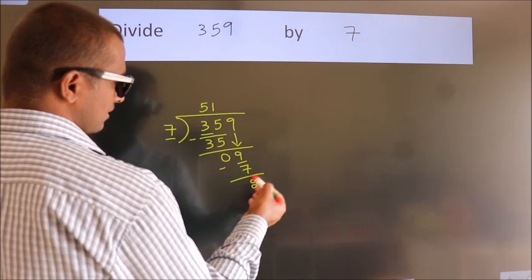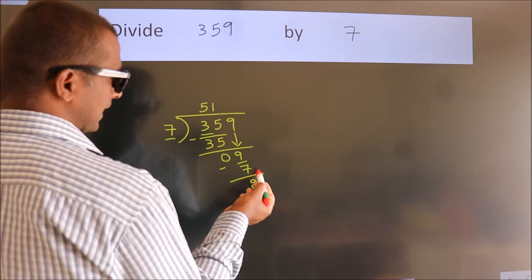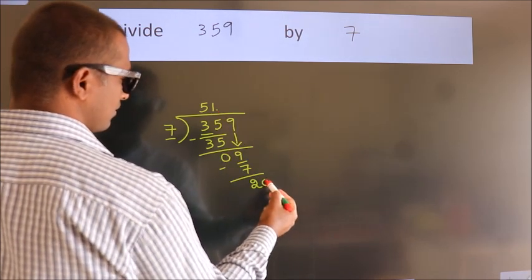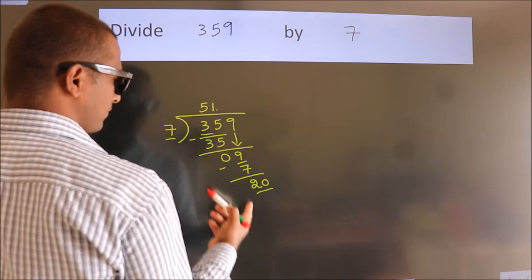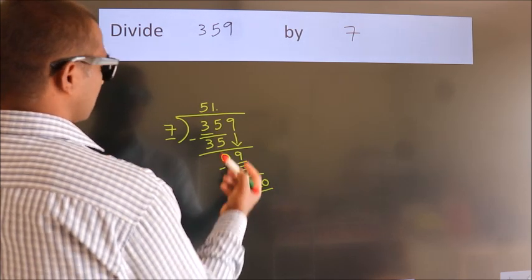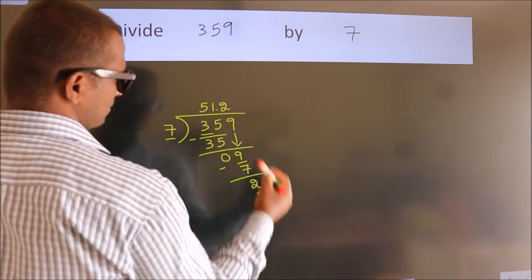After this, no more numbers to bring down. So what we do is we put a dot, take 0. So 20. A number close to 20 in the 7 table is 7 twos, 14.